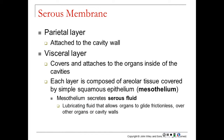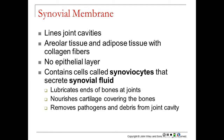Each serous membrane layer is made of areolar tissue covered by a simple squamous epithelium called mesothelium. The mesothelium secretes serous fluid that sits between the visceral and parietal layers, reducing friction as organs move — imagine the heart sitting in a fluid-filled plastic bag. Synovial membranes line joint cavities such as elbows, knees, and shoulders. They're made of areolar and adipose tissue with collagen fibers for support, and contain no epithelial layer.